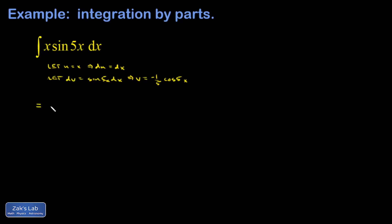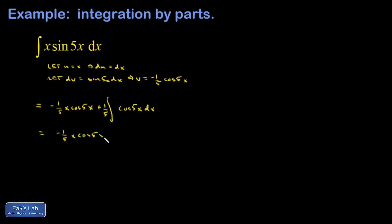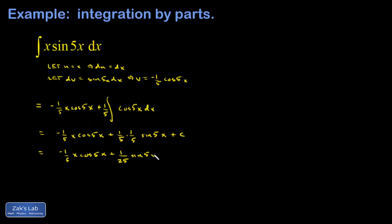Applying the integration by parts formula: uv is negative one-fifth x cosine 5x, minus the integral of v du. V carries a factor of negative one-fifth, which I bring out front, and du is just dx. The antiderivative of cosine 5x is one-fifth sine 5x, again by guessing the chain rule backwards. The final result is negative one-fifth x cosine 5x plus one over twenty-five sine 5x plus C.